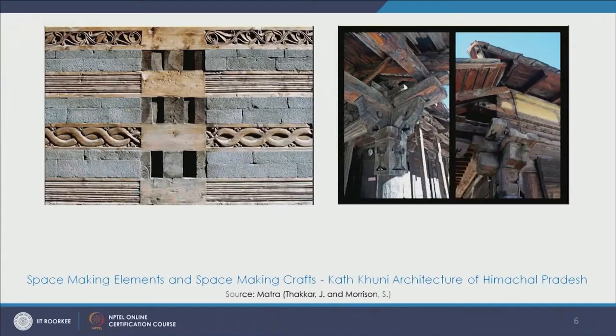Next, we can talk about the Kartkuni architecture of Himachal Pradesh. This reference has been taken from the book Matra, authored by Mr. Jai Thakkar and co-authored with Skye Morrison. We see this very interesting image — there are these alternate bands of stone and then there is timber. This was in response to the climate and the earthquakes that the region of Himachal Pradesh faced, and this kind of construction came from the traditional knowledge systems practised by the indigenous communities.